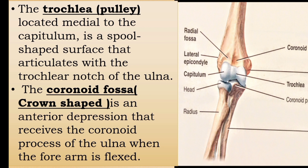The trochlea is located medial to the capitulum. It is a spool-shaped surface that articulates with the trochlear notch of the ulna.